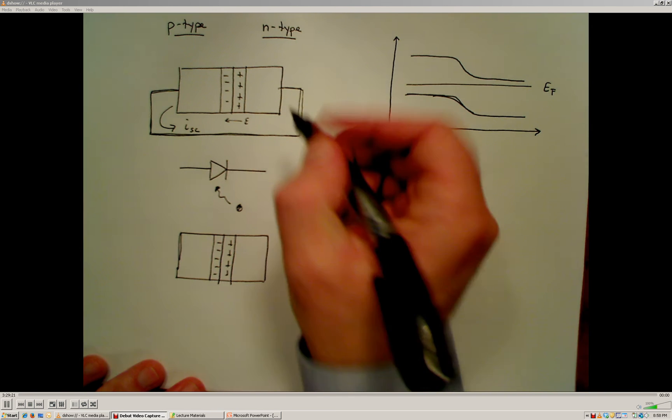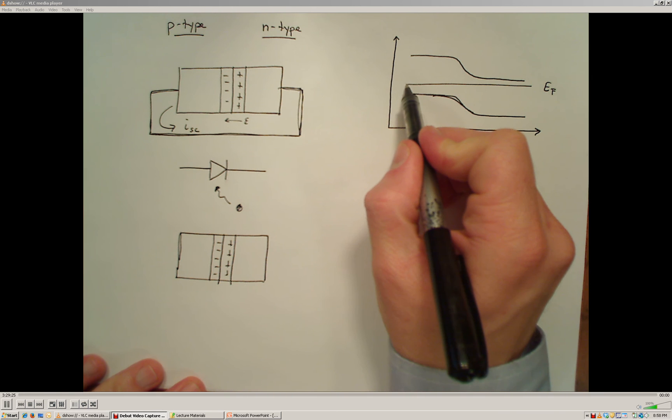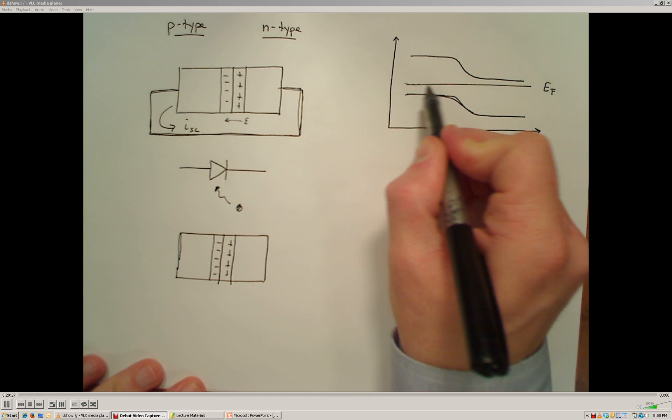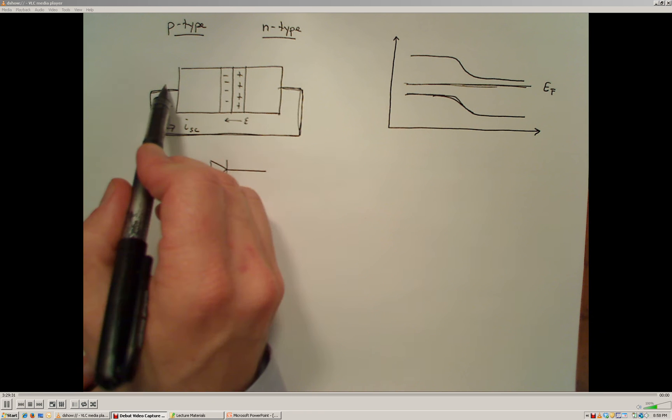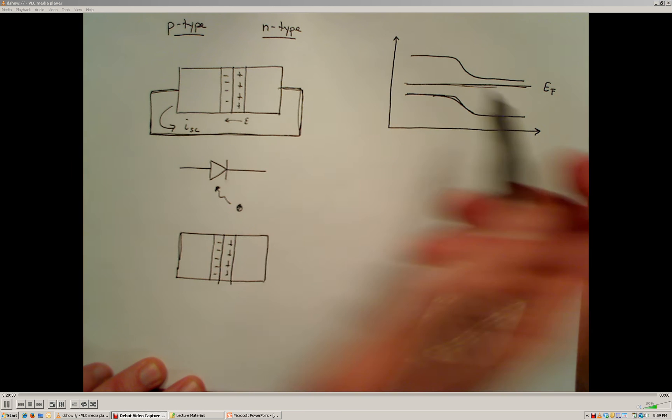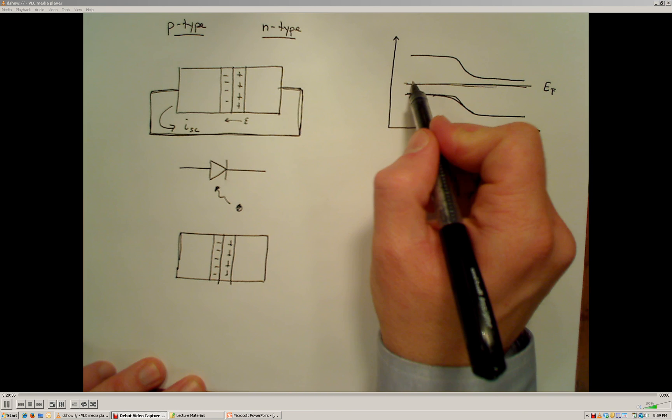If we connect those two ends together with a wire and assume that we're in thermodynamic equilibrium, then since there's no potential difference across either side, across the P type or the N type side, because of this wire that's connecting the two of them, then that means that the Fermi energy level has to be flat.